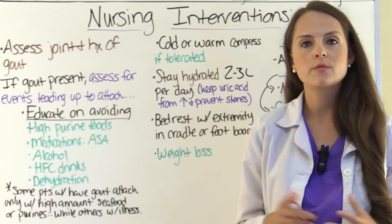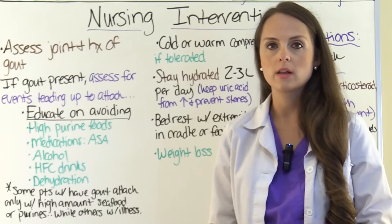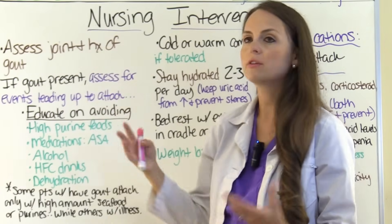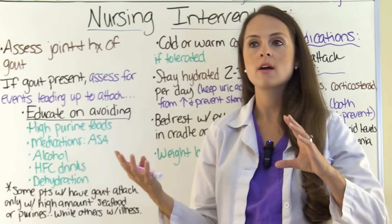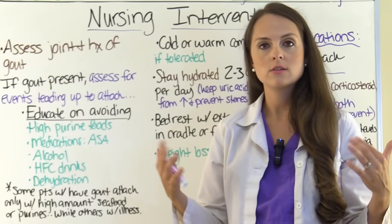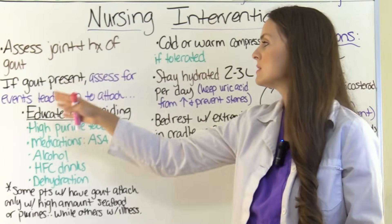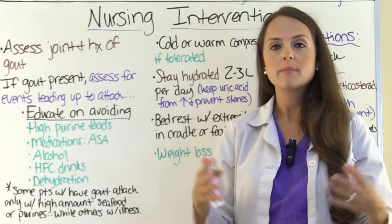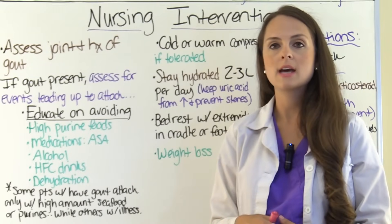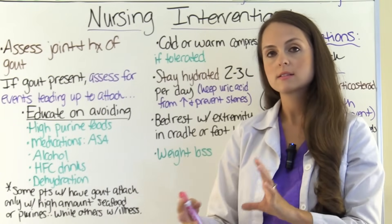Now let's look at our nursing interventions for gout. First, assess that joint — look at the swelling, is it warm, is it red, how painful is it, where is it located? Look at their health history: do they have a history of gout? Because if they are there for something else like pneumonia or infection, they are still at risk for developing gout, so be on high alert. If gout does present, ask the patient about the events that led up to the attack, because every patient is different — some get attacks from eating seafood or purine foods, while others only get an attack when they become sick.